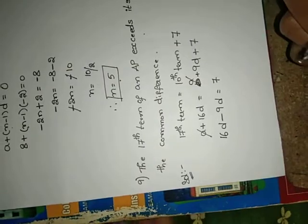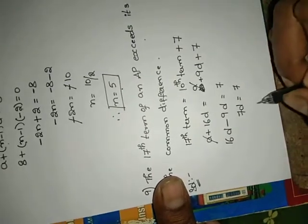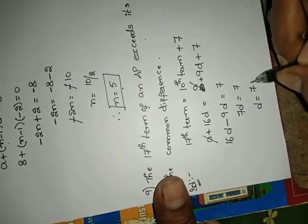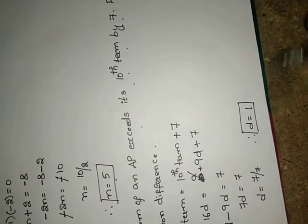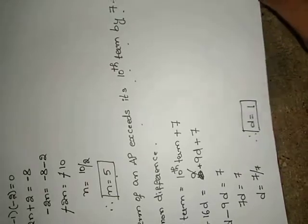16 minus 9 = 7. So 7D equals to 7. D equals to 7 by 7. Therefore D equals to 1. That's all. The common difference is 1. Problem is completed.